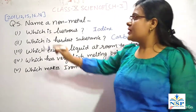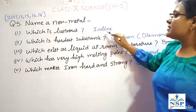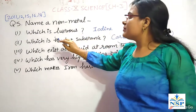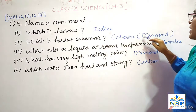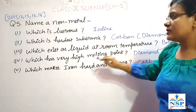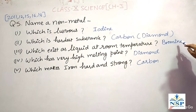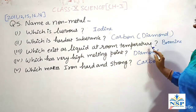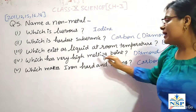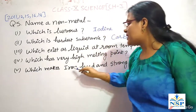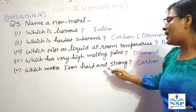Question number 5: name a non-metal which is lustrous — the answer is iodine. Which is the hardest substance? Carbon in the form of diamond is the hardest substance. Which non-metal exists as liquid at room temperature? Bromine is a non-metal which exists as liquid at room temperature. Which has a very high melting point? Diamond has a very high melting point. And which non-metal makes iron hard and strong? Carbon is the non-metal which makes iron hard and strong.